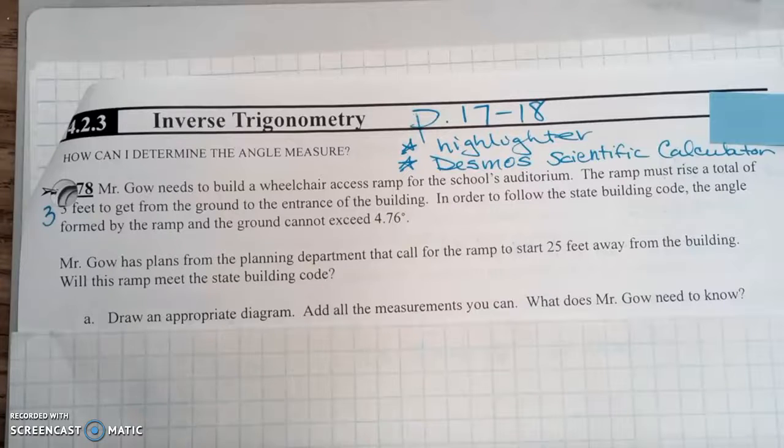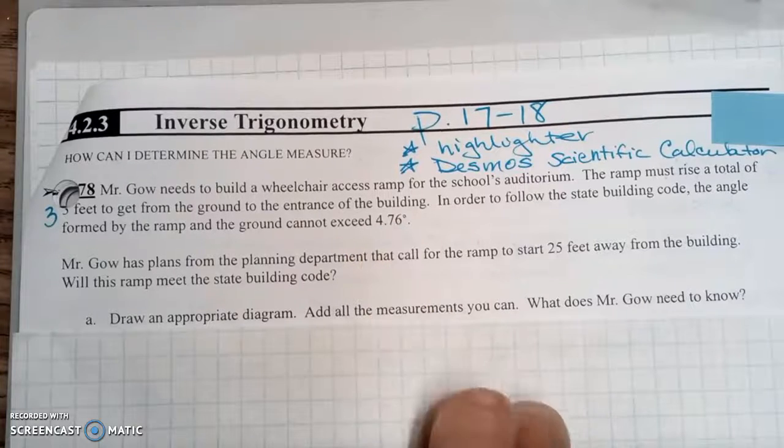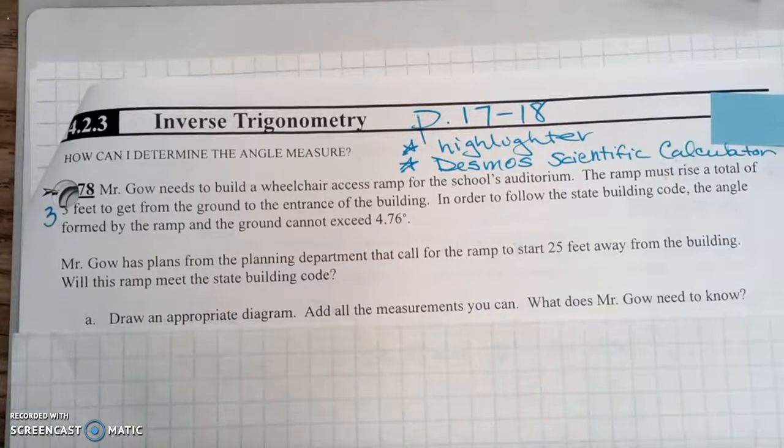So for question 78, it says Mr. Gao needs to build a wheelchair access ramp for the school's auditorium. The ramp must rise a total of three feet to get from the ground to the entrance of the building. In order to follow the state building code, the angle formed by the ramp and the ground cannot exceed 4.76 degrees. Mr. Gao has plans from the planning department that call for the ramp to start 25 feet away from the building.